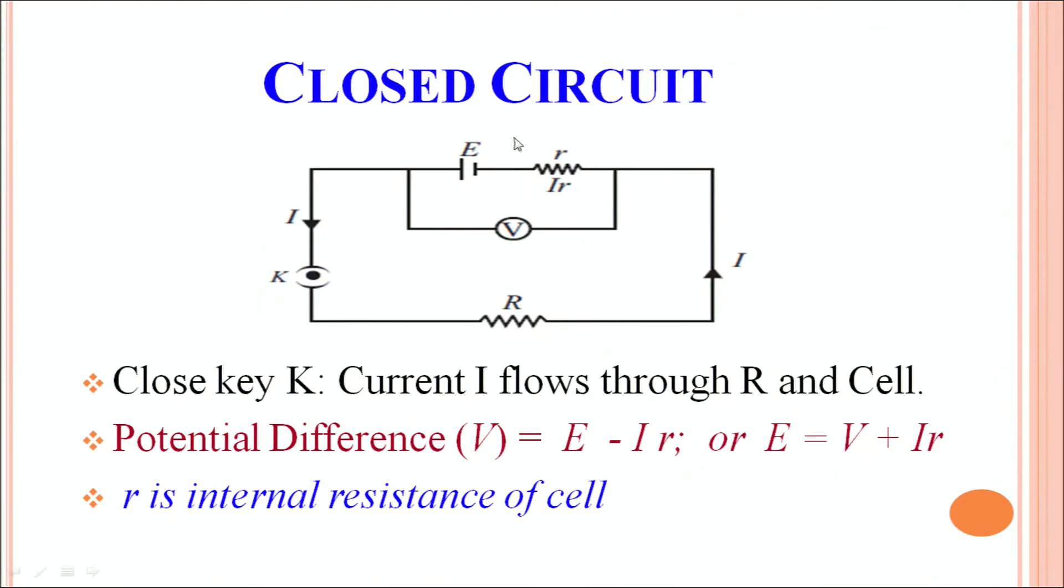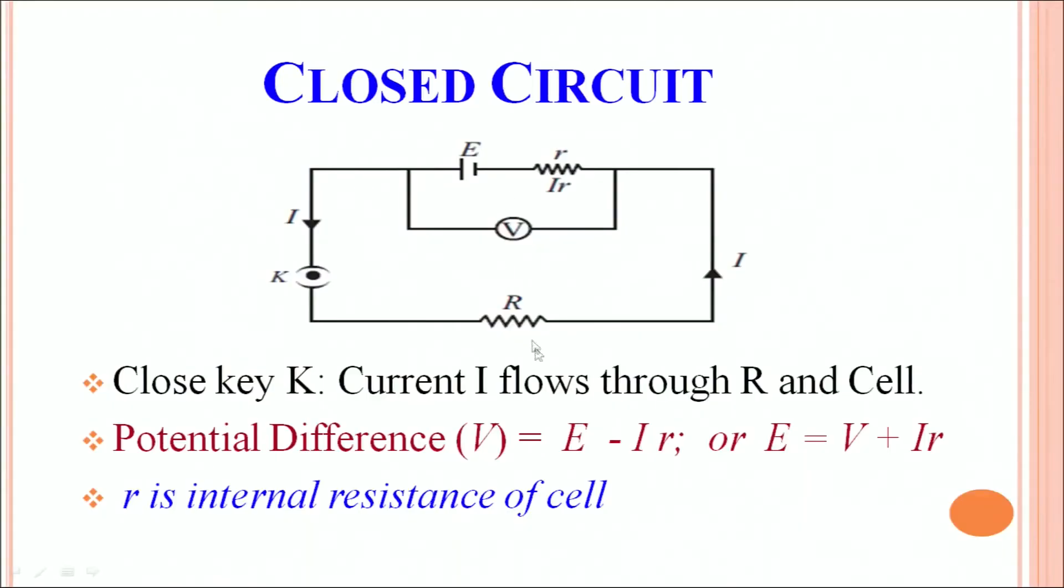Now each battery has a small internal resistance which we can call a small r. If there is a flow of current through the battery, there will be a small potential drop across that and that is called i into small r. So in a closed circuit, the potential difference measured by the voltmeter is E minus ir. You can write the same thing as E is equal to V plus ir.